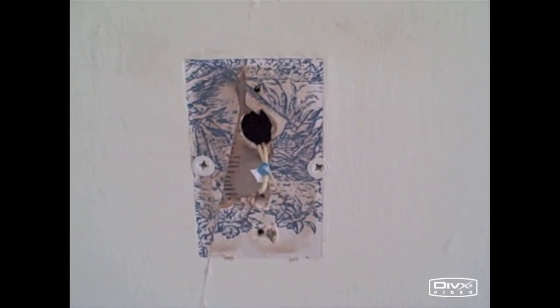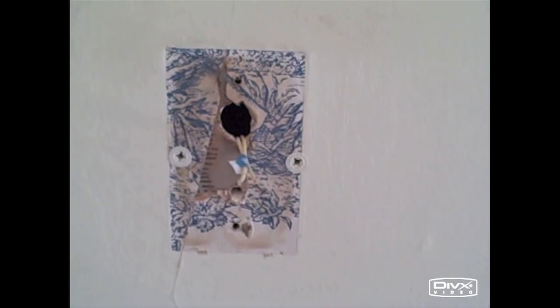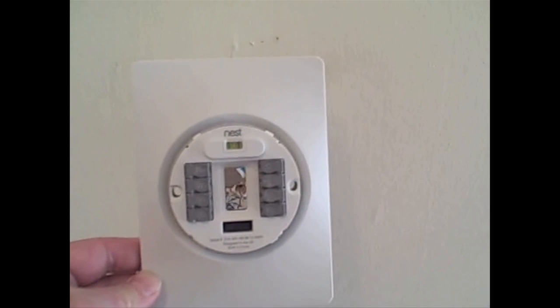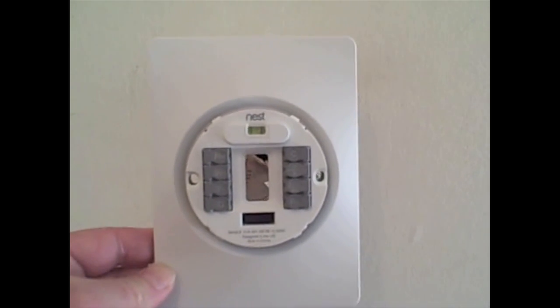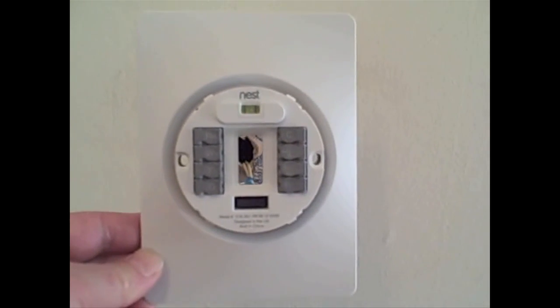In order to cover the old outline of the old thermostat, we are using the larger cover plate that the nest comes with. Before you install it, you can put the base on as shown and then you use the screw holes to the left and right of it.